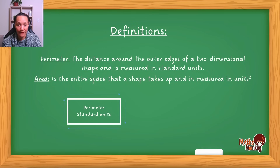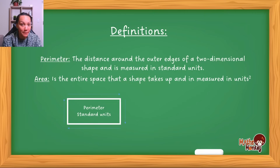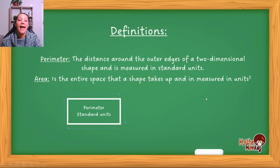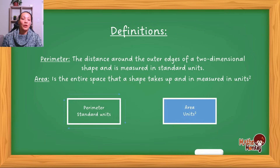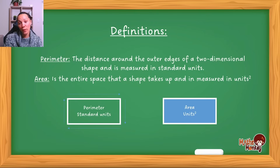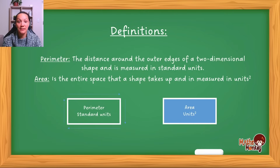Area, however, is the entire space that a shape takes up — not just the outside sides. Area speaks to the entire space that a shape takes up, and this is in units squared. So when you're giving your answers, if it's in centimeters you're going to give it in centimeters squared. However, if it's perimeter, you just write centimeters. That's what I mean by standard units.